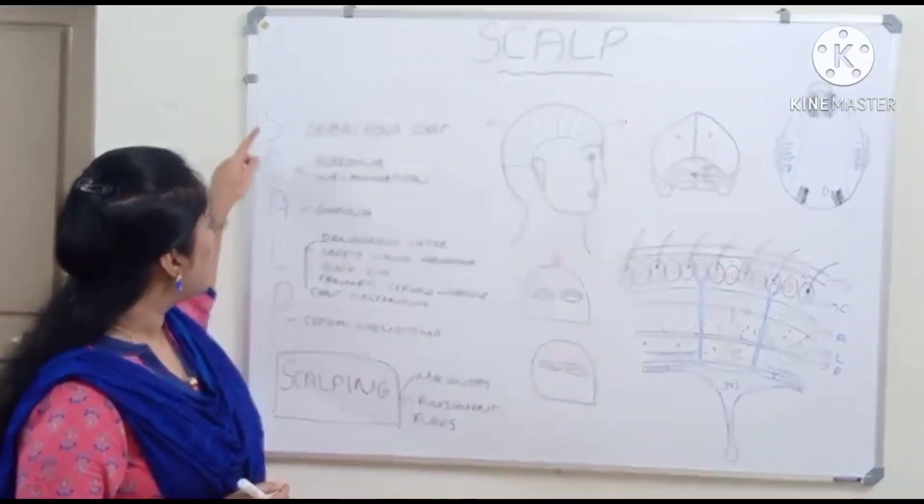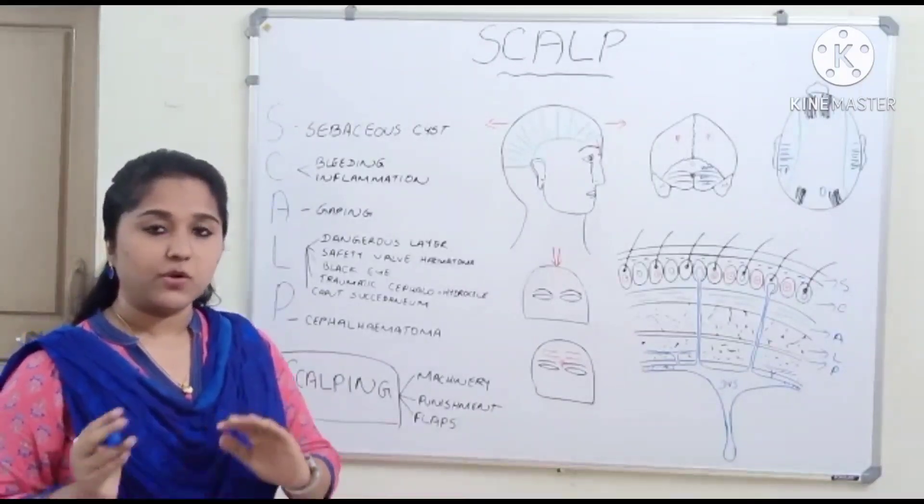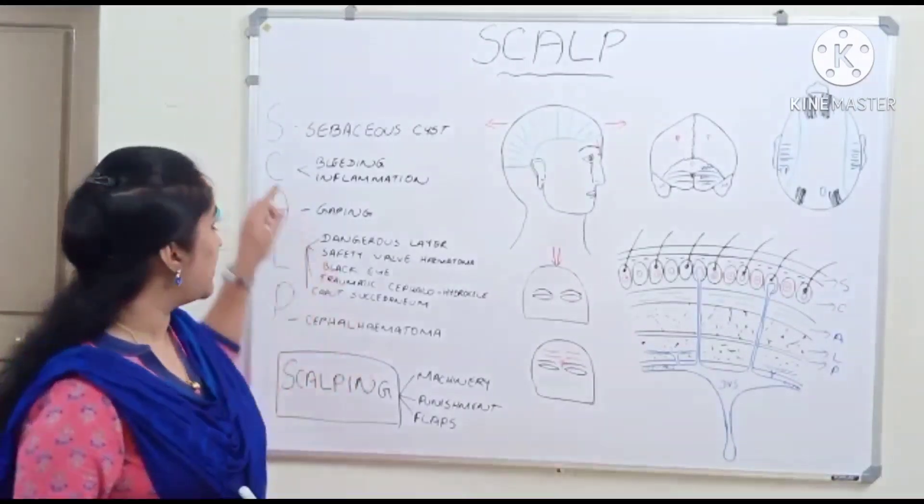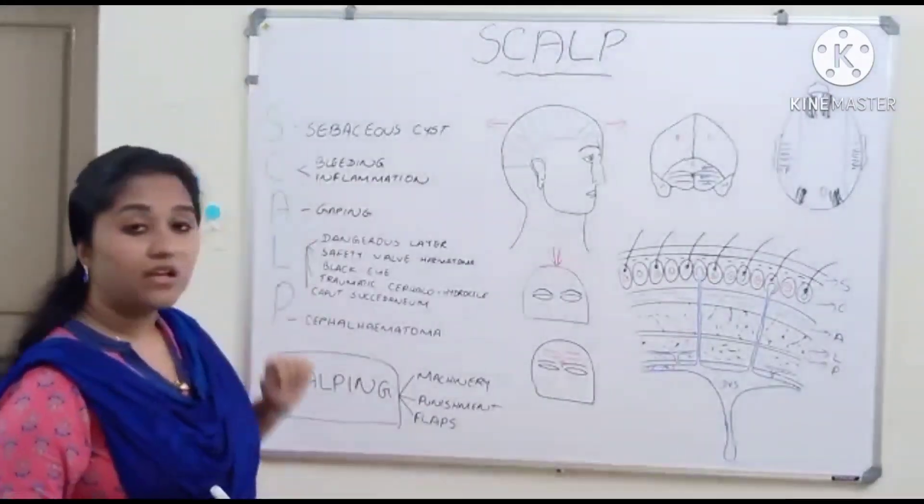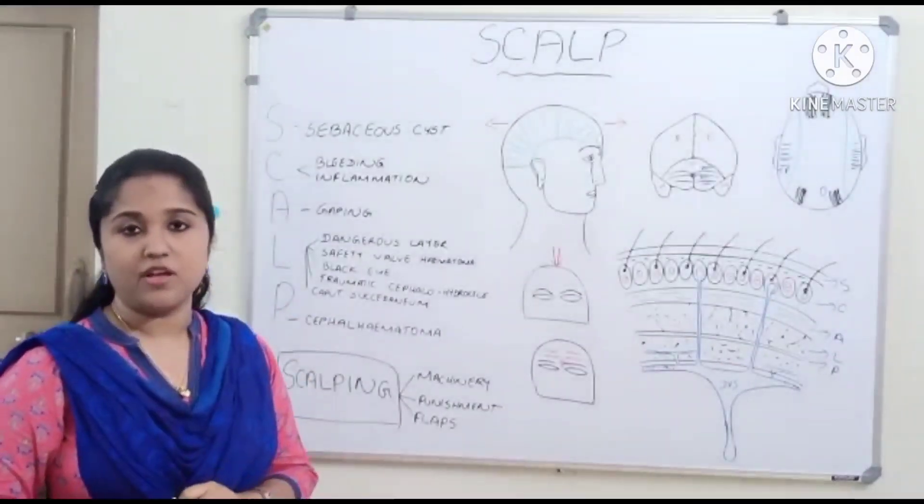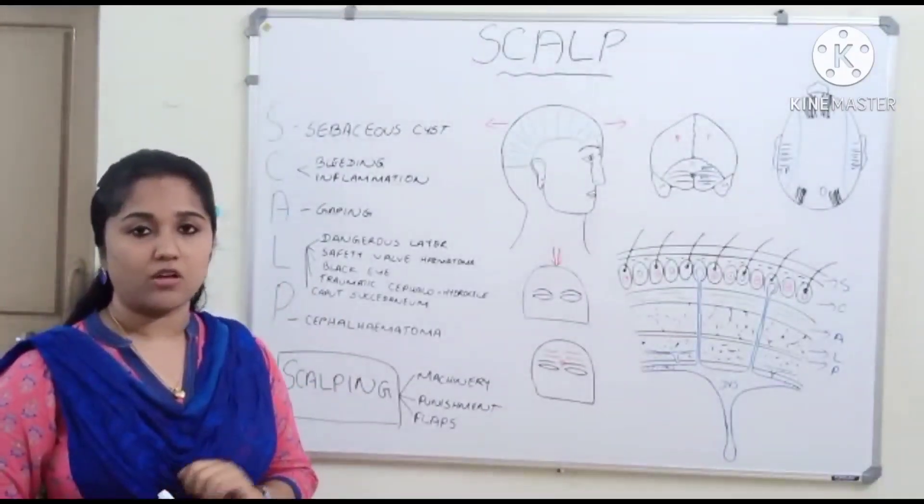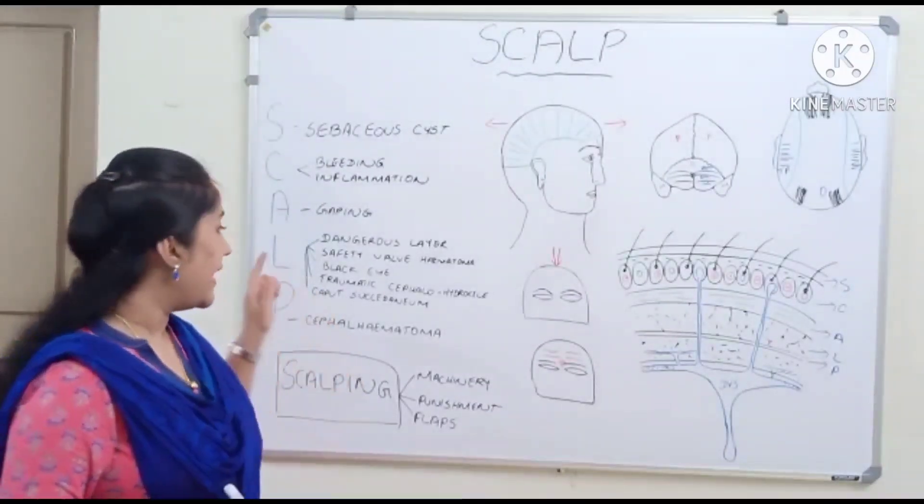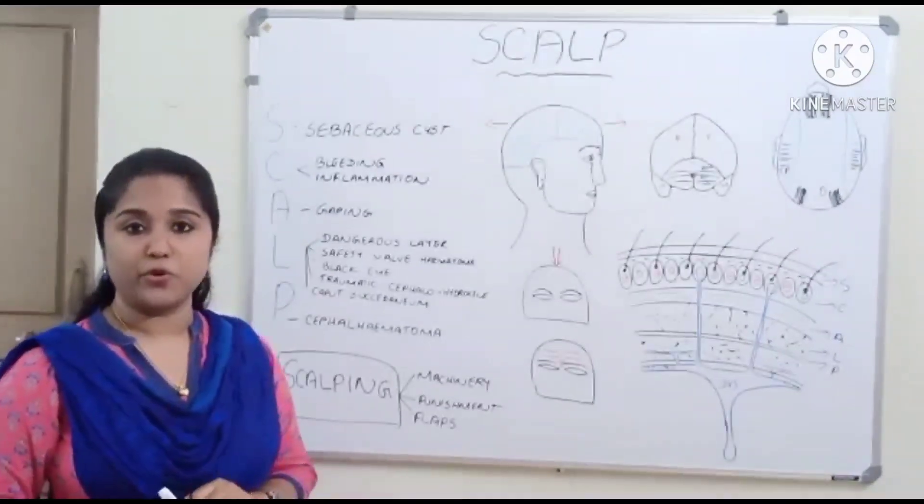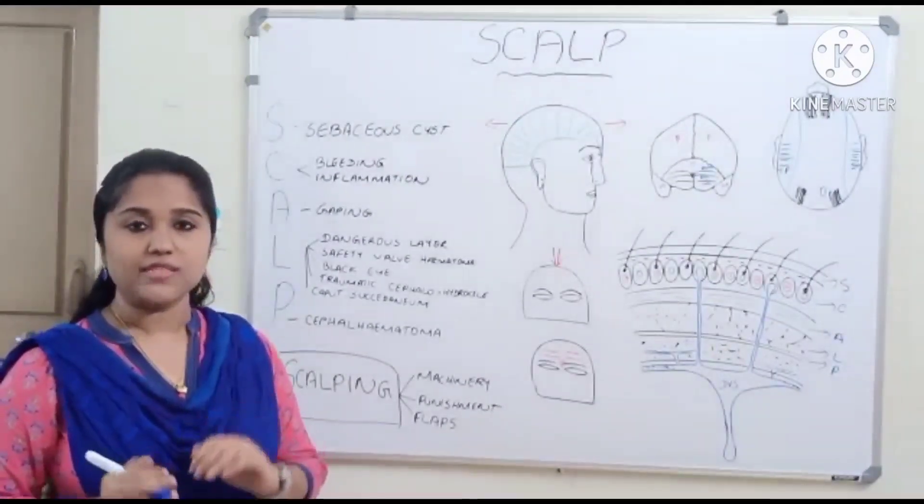The layers we can remember by the mnemonic SCALP itself. We have five layers: S is skin, C is close network of subcutaneous tissue, A stands for aponeurosis and occipitofrontalis muscle, L stands for loose sub-aponeurotic tissue, and P stands for pericranium.